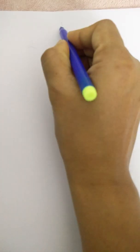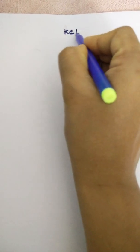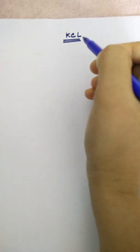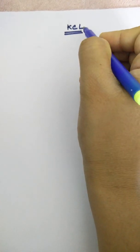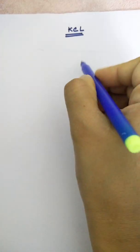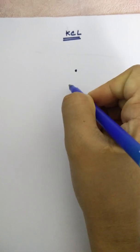Today we are going to study KCL, that is Kirchhoff's current law. In order to define KCL we need to know about junction or node.